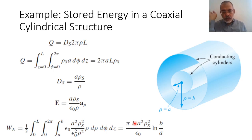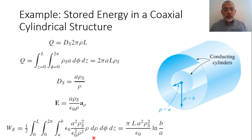Evaluating the integrals: the z-integration gives L, the φ-integration gives 2π which combines with the factor of one-half to give π, and the ρ-integration of 1/ρ gives ln(ρ) evaluated from a to b, yielding ln(b/a). The ε₀ in the denominator cancels one power from ε₀², leaving 1/ε₀. The final result for the stored electric energy inside a coaxial structure of length L is: W_E = π·L·ρ_surface²·ln(b/a) / ε₀.